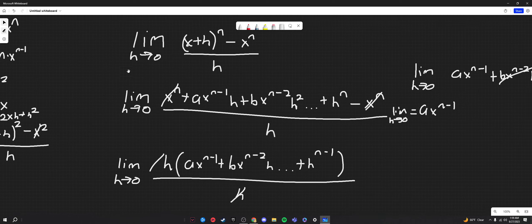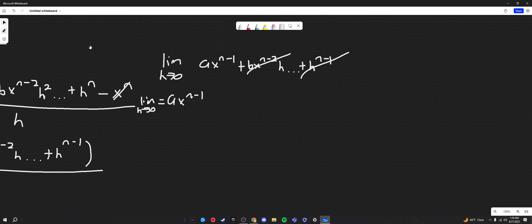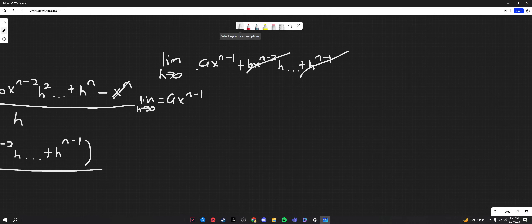a times x to the n minus 1, which is remarkably close to what we wanted. We wanted n times x to the n minus 1. So all we really have to do is ascertain what this a coefficient is. And in order to do that, we'll have to take a look at some binomial expansion.